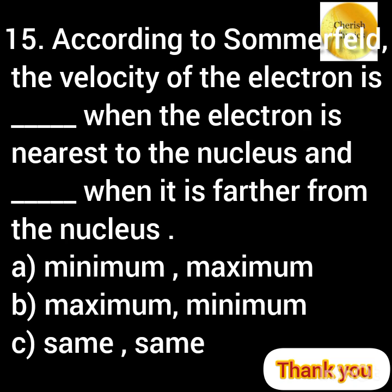According to Sommerfeld, how does the velocity of an electron vary when the electron is nearer and farther from the nucleus? Thank you.